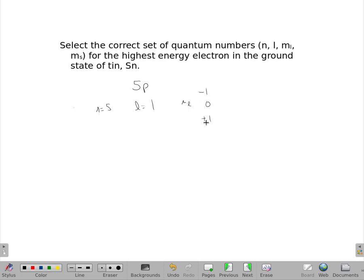There are three possible answers there. And even with our m sub s, even though we always seem to draw up arrows when we first put electrons in and then down arrows, we can't tell them apart. So there are two possible m sub s values: either positive 1/2 or negative 1/2.